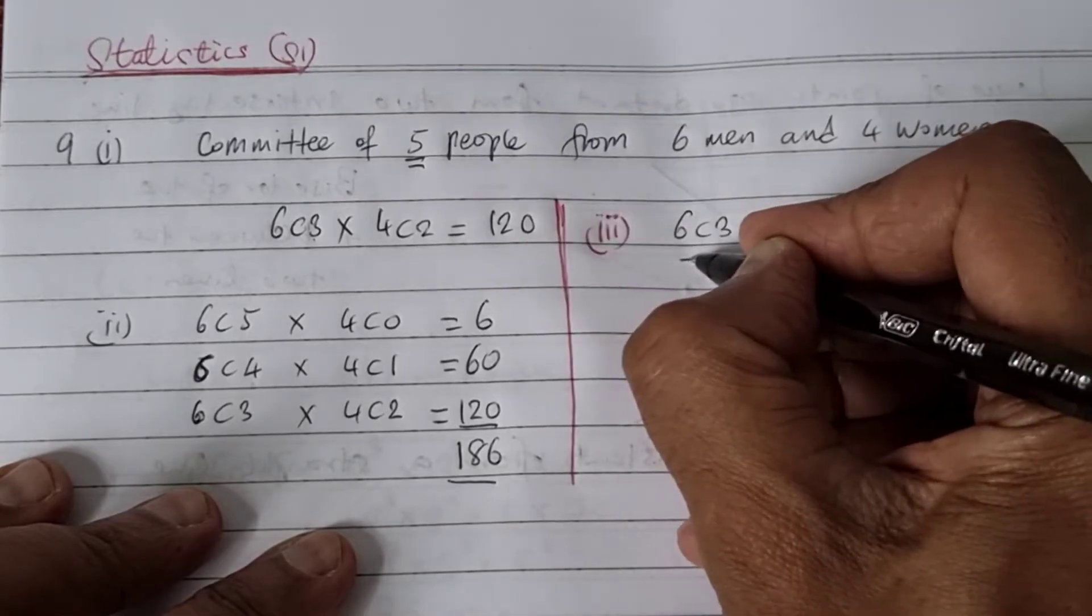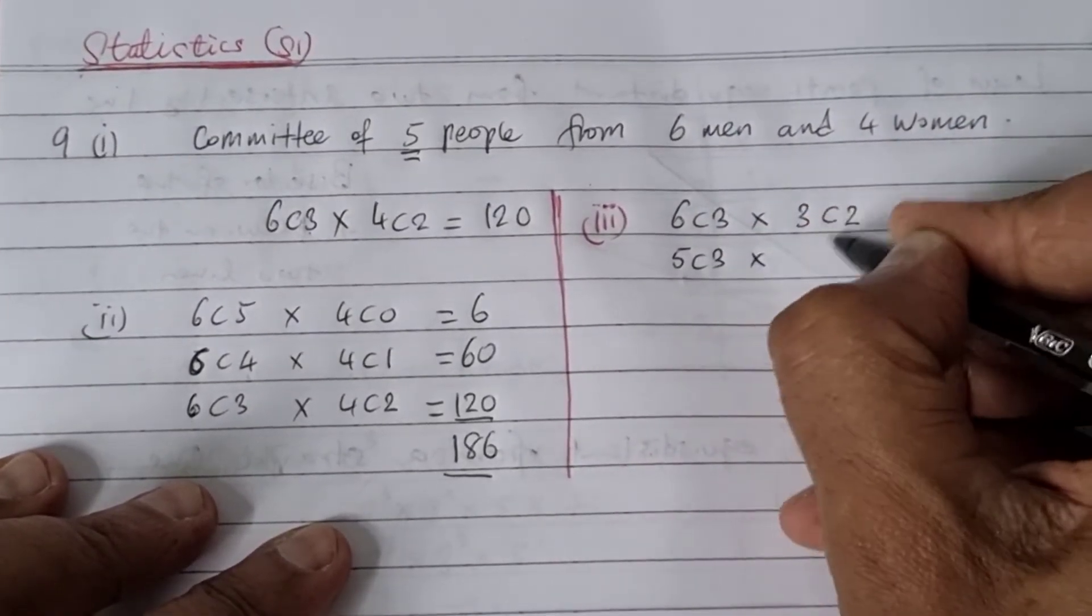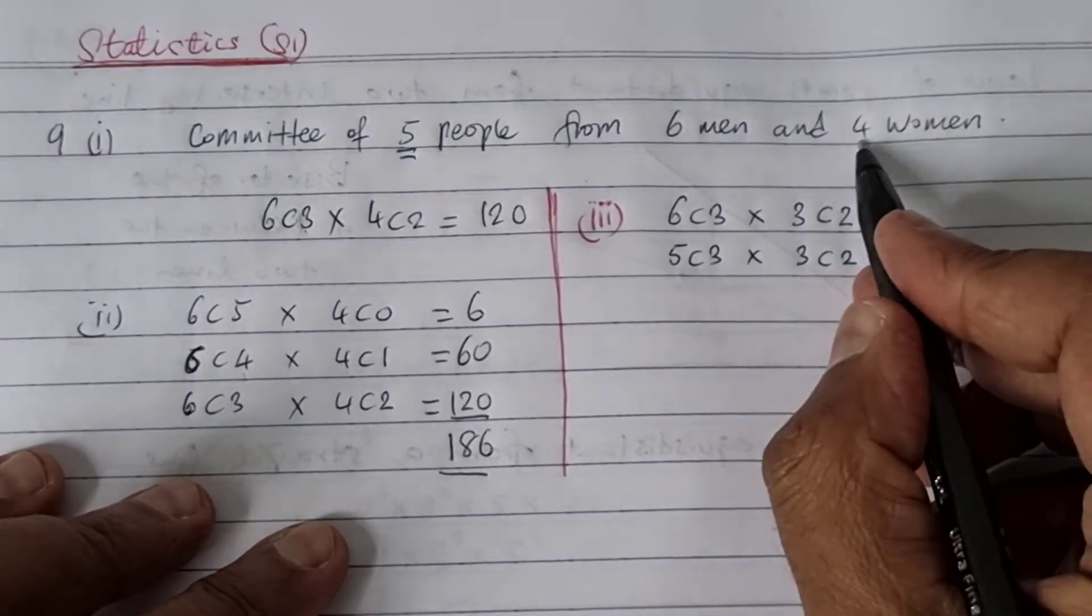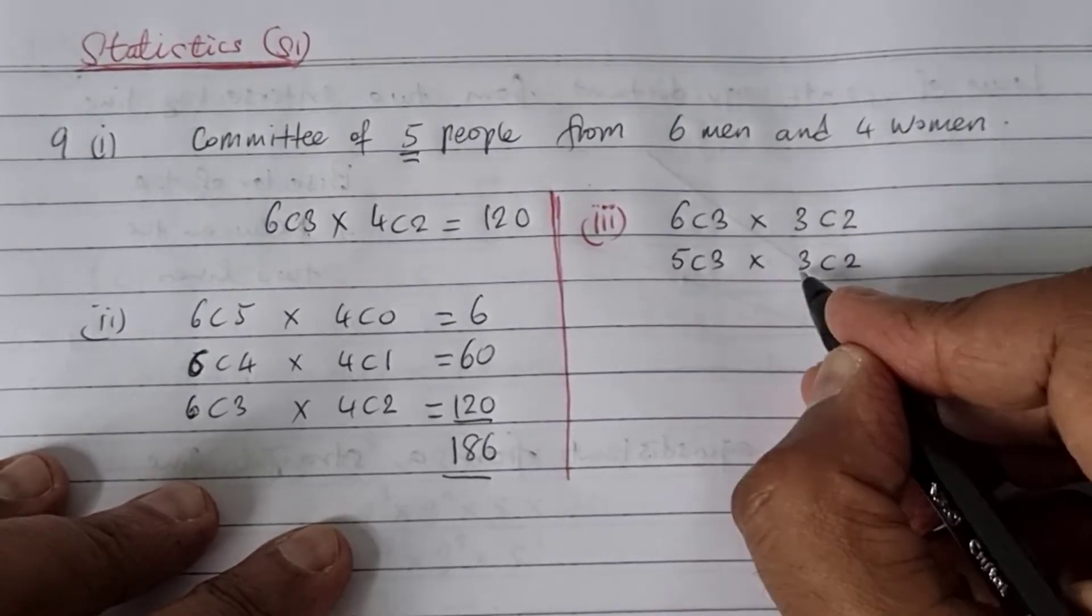I'm going to say the man is out, so I'm left with five men, and still got to choose three from five. And then the woman is out, so three choose two. Because out of four women, one woman is out, and I've got to choose two from the remaining three.